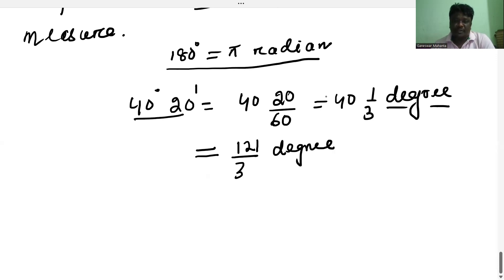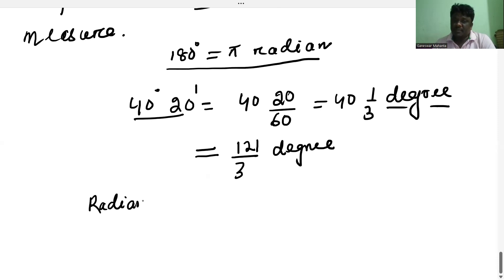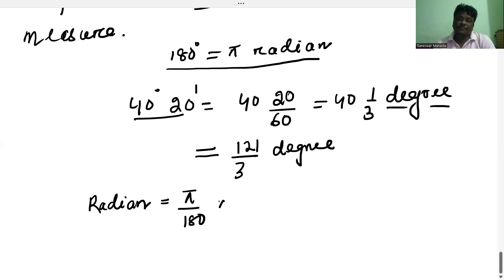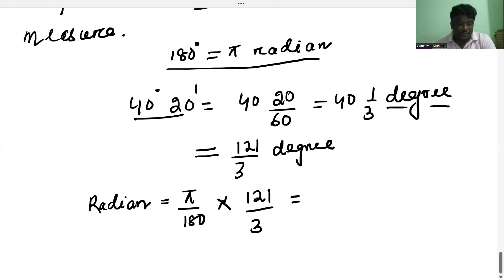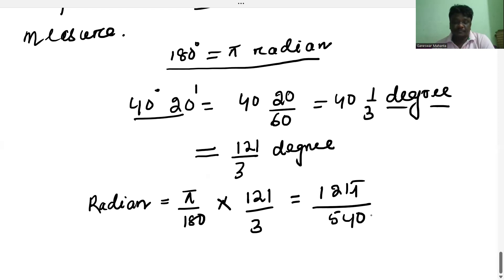We need to convert 121/3 degrees into radian measurement. The formula is: radian measure equals pi by 180 degrees, multiplied by the degree measure. So radian measure equals pi divided by 180, multiplied by 121 by 3. Simplifying this value gives us 121 pi divided by 540 radian.